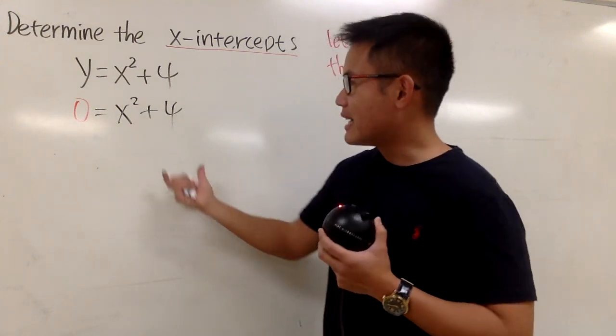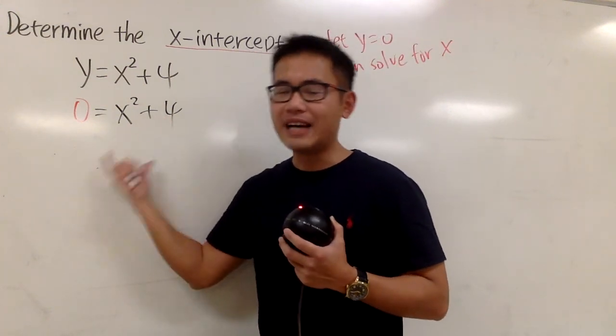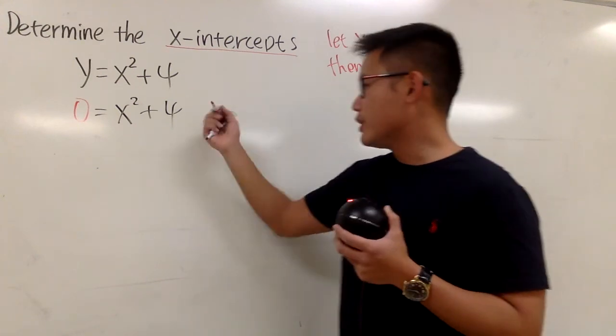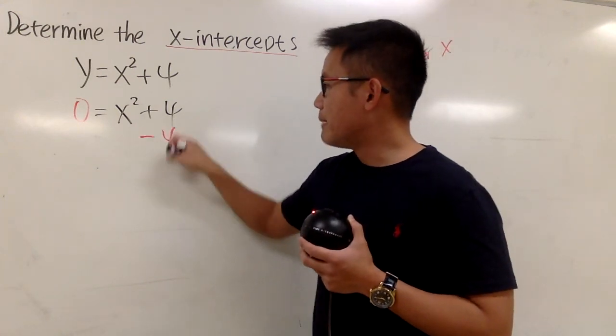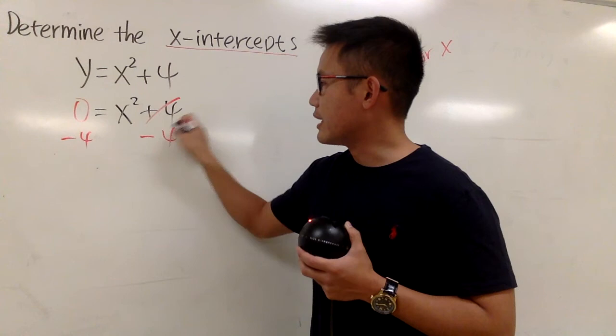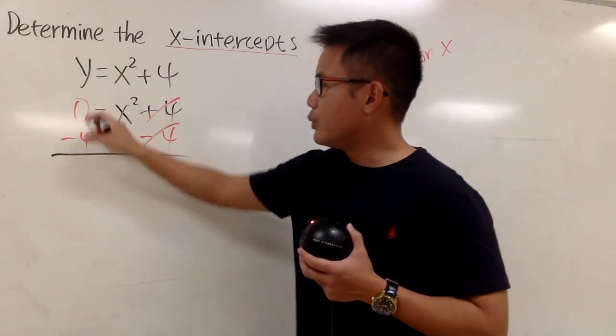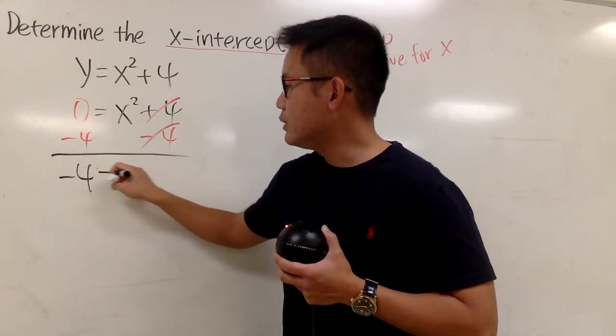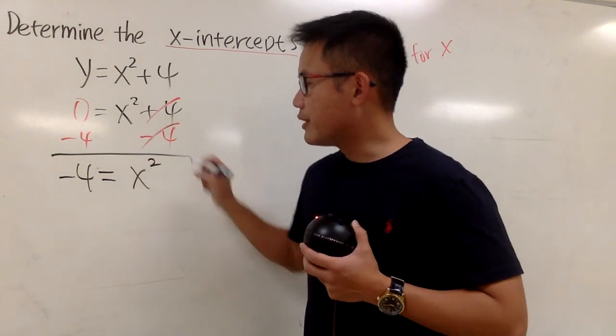The worst part is that it doesn't have any real solutions. To see that, you can do the usual procedure. Subtract 4 from both sides, so they cancel. Then we have -4 = x².